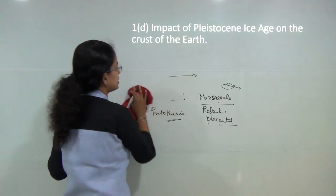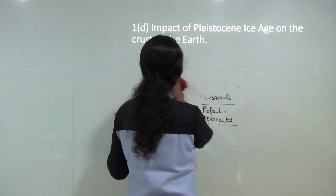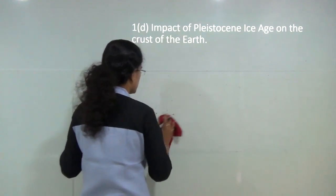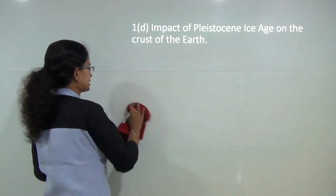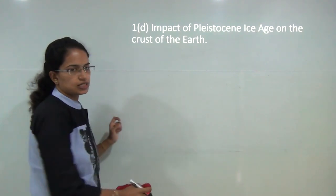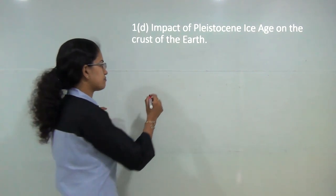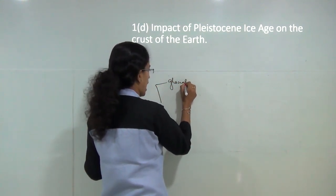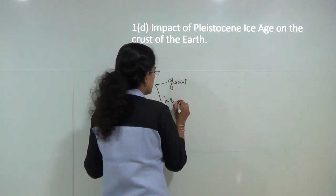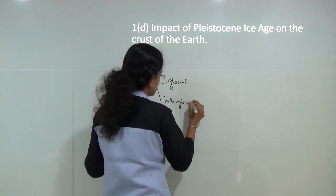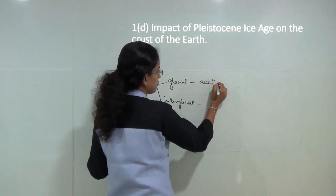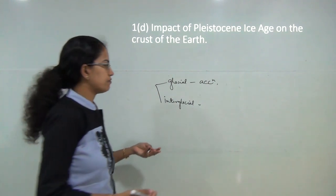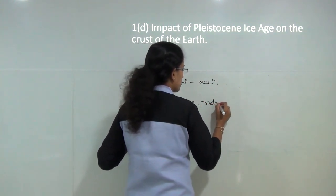The next question is the impact of the Pleistocene ice age on the crust of the Earth. The Pleistocene ice age existed around 1.5 million years ago. This phase was divided into two sections: the glacial phase, which involved accumulation of ice, and the interglacial phase, which involved the retreat of ice.